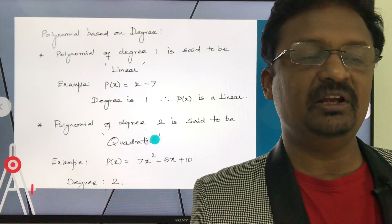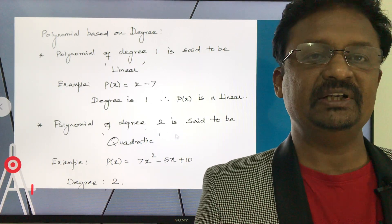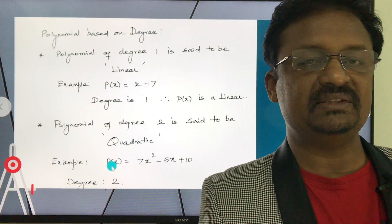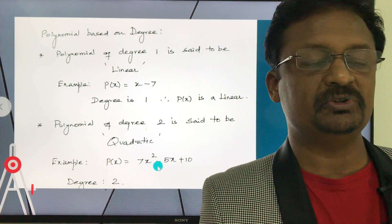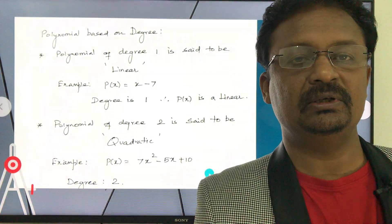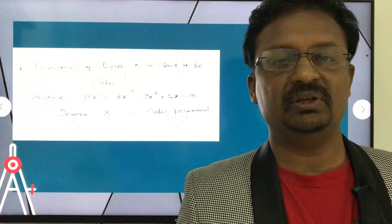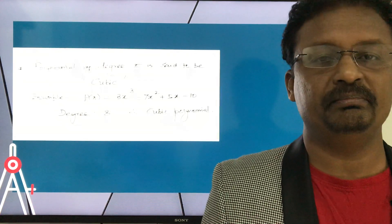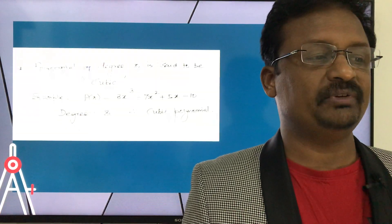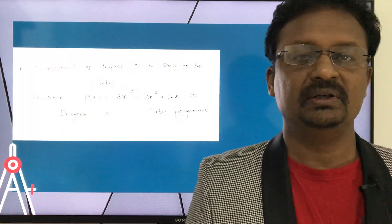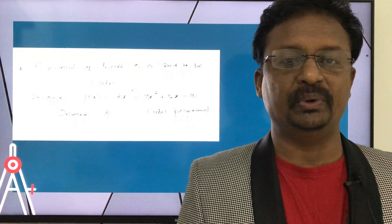If the degree of the polynomial is 2, it is called a quadratic polynomial. For example, P(x) = 7x² - 5x + 10 has degree 2, so it is quadratic. If the degree is 3, it is called a cubic polynomial — for example, P(x) = 3x³ - 7x² + 5x - 10.